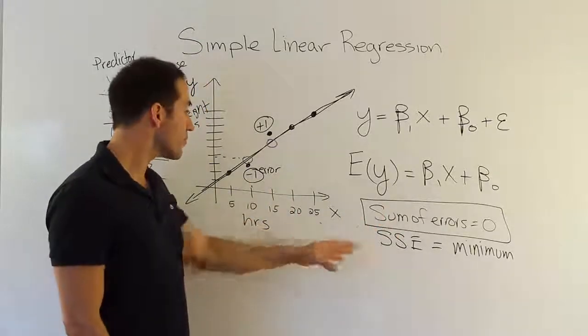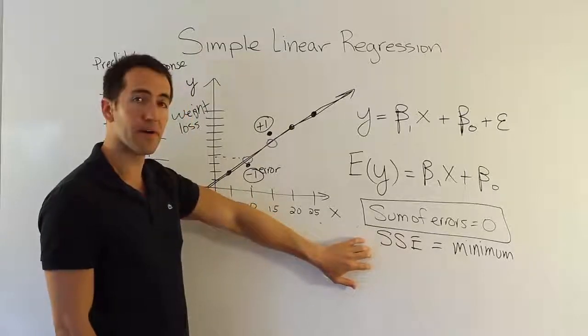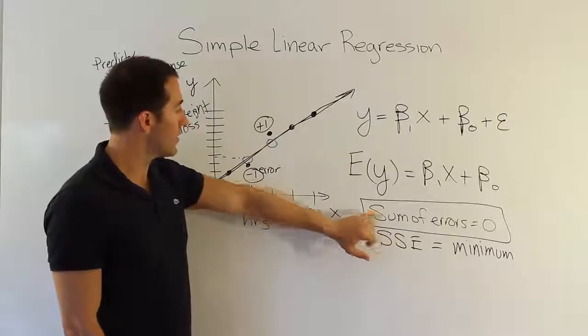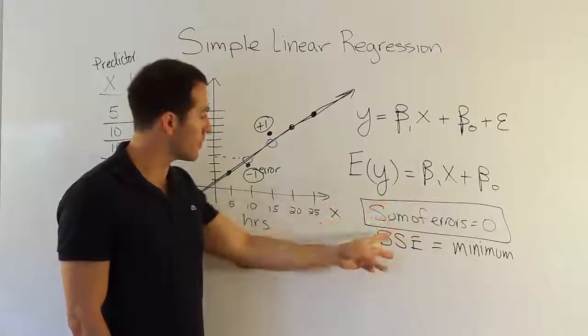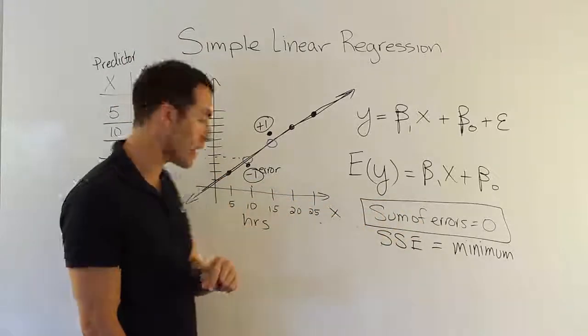Okay, so, in a way, we want to have the smallest possible sum of square error, and we want to have the sum of errors to be zero. If those two traits are met, we're going to have a special kind of line.